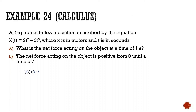We have x = 2t² − 3t³. The derivative of position gives velocity: v(t) = 4t − 9t². The derivative of velocity gives acceleration: a(t) = 4 − 18t.